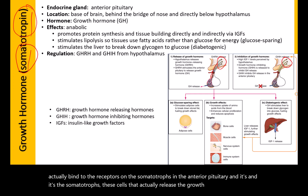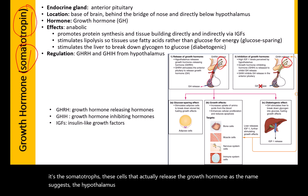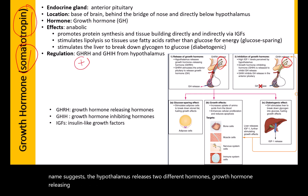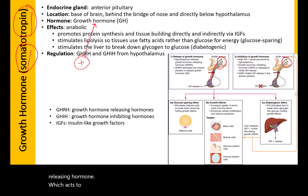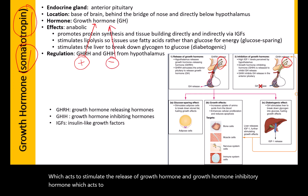The hypothalamus releases two different hormones: growth hormone releasing hormone, which acts to stimulate the release of growth hormone, and growth hormone inhibitory hormone, which acts to inhibit growth hormone release.